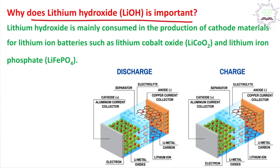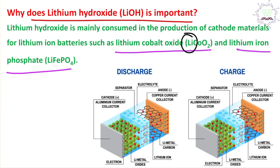Why is lithium hydroxide important? It is used in large amounts in lithium-ion battery cathode materials — that is, lithium cobalt oxide (LiCoO₂) or lithium iron phosphate (LiFePO₄). When charging, lithium ions migrate from the cathode material to the graphite layer and are stored there — this is how energy is stored. When discharging, if you connect the external circuit, these lithium ions move from the graphite layer back to their original position, and in the outside circuit you get electricity flow. This is the overall mechanism.